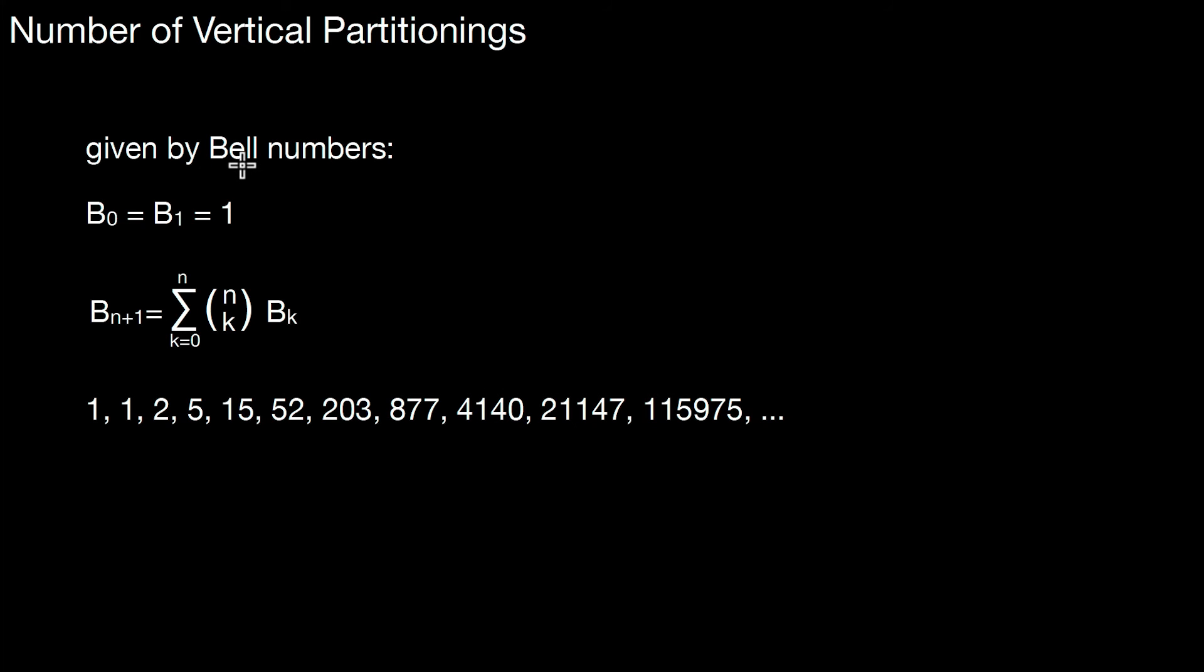So the bell numbers are defined as follows. B0 and B1 are set to 1. Then the following bell numbers are defined as Bn+1 is the sum of k equals 0 to n of n choose k times Bk. And with that, you get a sequence like this. So n is a number of attributes in a relation.